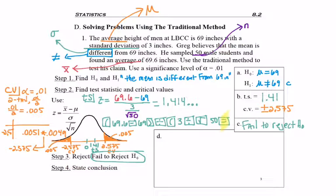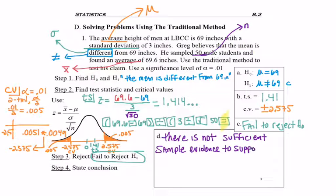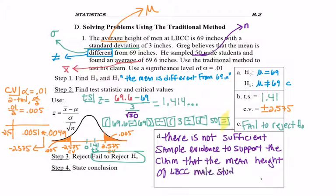Now I'm ready to write my final conclusion. I go to my flowchart, and I first decide that H1 is my claim. Then I decide that I failed to reject H0. So I know that it will start off with there is not sufficient sample evidence to support the claim that, and then I'll finish it off. There is not sufficient sample evidence to support the claim that the mean height of LBCC male students is different from 69 inches. This beginning piece I took word for word right off of the flowchart, but for the rest of it, I need it to be a coherent sentence. The key is that we're talking about the population parameter for mean, different from 69 inches.